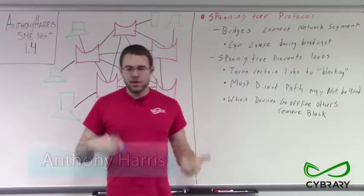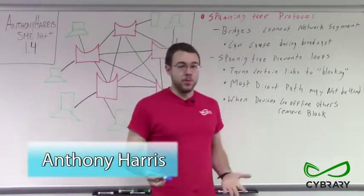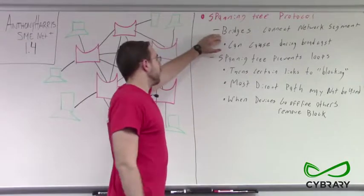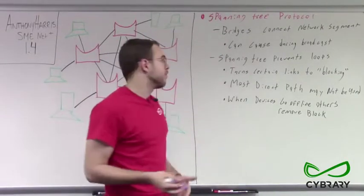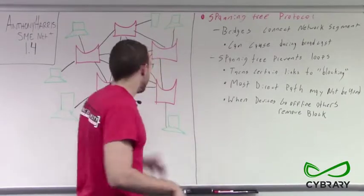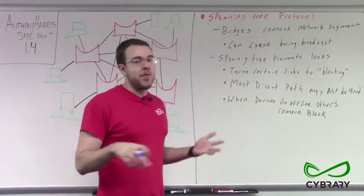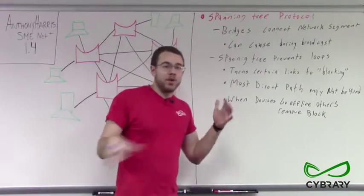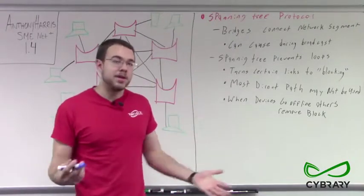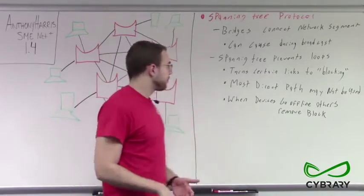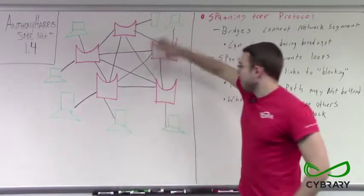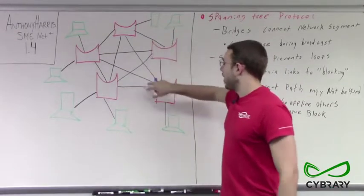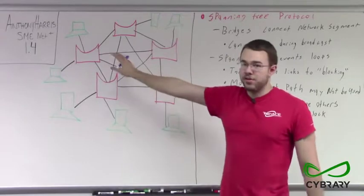Our next concept is called Spanning Tree Protocol. In our network we may have different bridges or devices which connect network segments. These different devices or bridges may also connect to each other in multiple different ways in order to provide reliability as well as quick connections. This is good because we have an example of a mesh topology where all of our bridges are connected to all of the other bridges on our network.